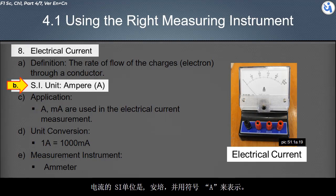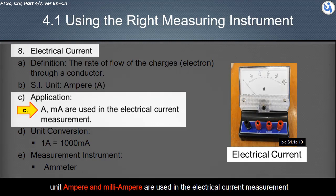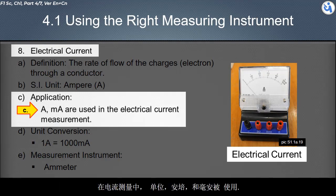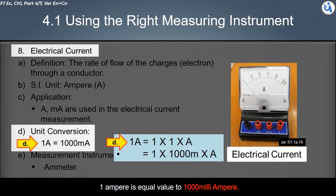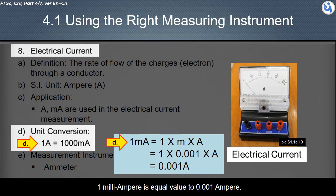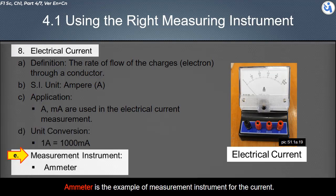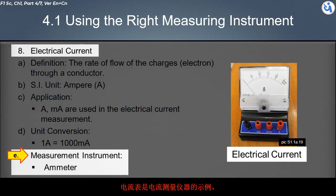Unit ampere and milliampere are used in the electrical current measurement. 1 ampere is equal value to 1000 milliampere. 1 milliampere is equal value to 0.001 ampere. Ammeter is the example of measurement instrument used for electrical current measurement.